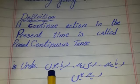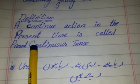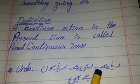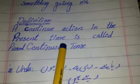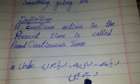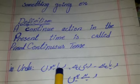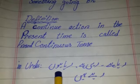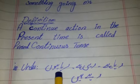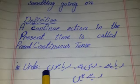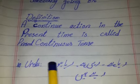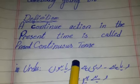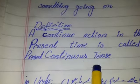'Main apna kaam kar raha hoon' — present continuous tense. 'Woh ro raha hai' — present continuous tense. 'Hum khel rahe hain' — present continuous tense. 'Ammi bazaar ja rahi hain' — present continuous tense. 'Main khel raha hoon' — present continuous tense. These words indicate that it is present continuous tense.